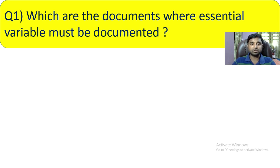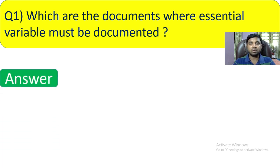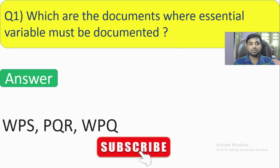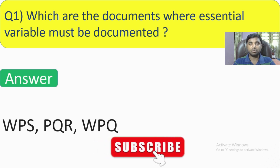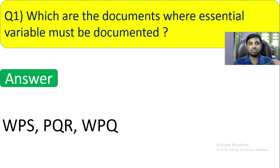Question number 1: Which are the documents where essential variables must be documented? Give some examples of documents where essential variables are documented. The answer is WPS, PQR, and WPQ. These are the documents where essential variables must be documented.